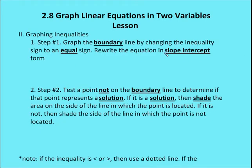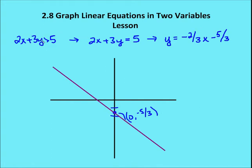Let's talk about how we graph inequalities. The first step is to graph the boundary line by changing the inequality to an equal sign, then rewrite the equation in slope-intercept form. For our example, 2X plus 3Y greater than 5, I change it to 2X plus 3Y equals 5. Rewriting in slope-intercept form gives a slope of negative 2/3 and a Y-intercept of negative 5/3, and I graph that equation.